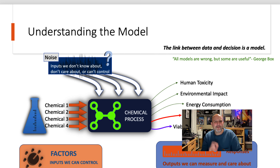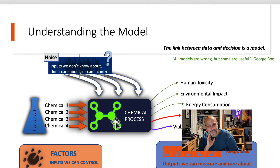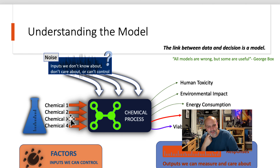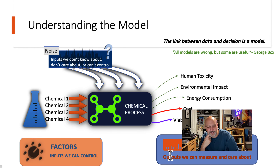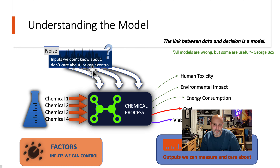What is a model? We have a chemical process in the middle. We have chemicals one, two, three, four — let's say it's a mixture design. We have factors on the left and responses on the right. The things that come out are the responses; the factors we put in are affected by noise. Noise refers to things we aren't controlling, don't know we could control, or don't care about.